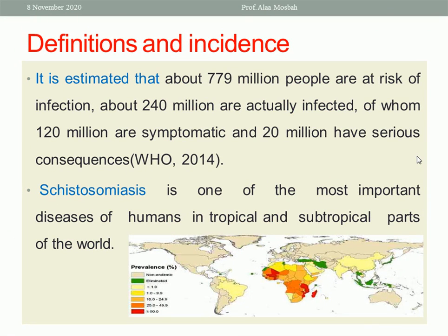It is estimated that about 779 million people are at risk of infection and about 240 million are actually infected, 120 million are symptomatic, and 20 million have serious consequences. Schistosomiasis is one of the most important diseases of humans in tropical and subtropical parts of the world.